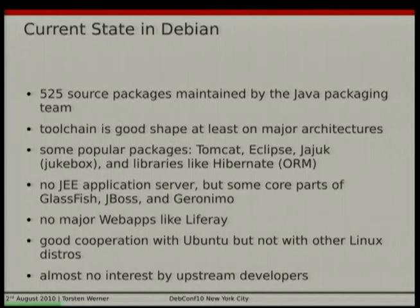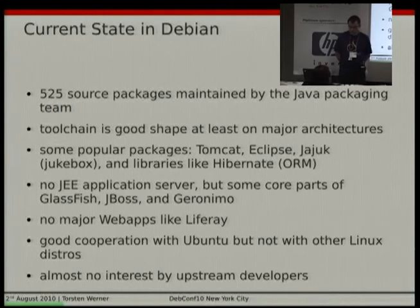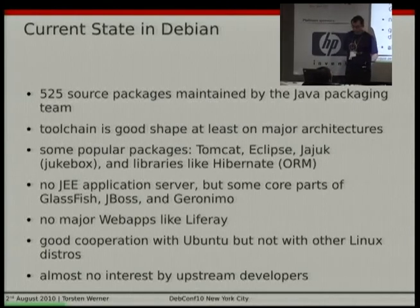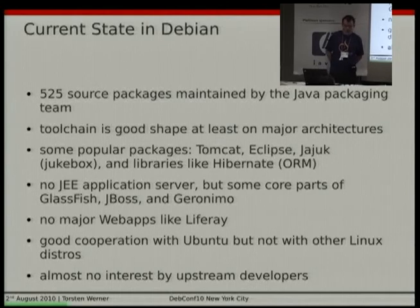The current state in Debian is that the Java packaging team is maintaining more than 500 source packages today. There are other people maintaining Java packages too, but I haven't counted them. It's quite fast-growing — we were about 400 source packages at the beginning of this year, so we are now more than 100 more. Our toolchain is in good shape on our major architectures. We have some popular packages in Debian: Tomcat, Eclipse, Jarjook, Jukebox as a desktop application, and some libraries like Hibernate.